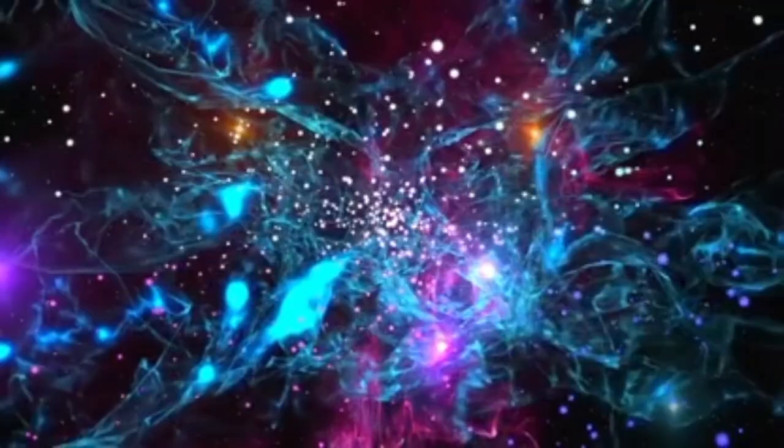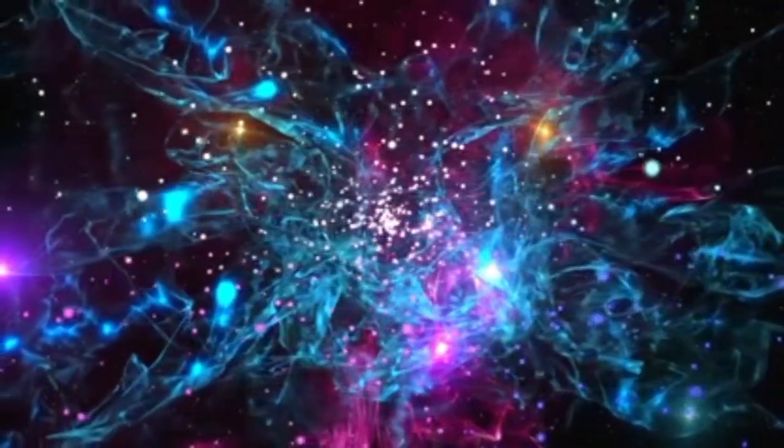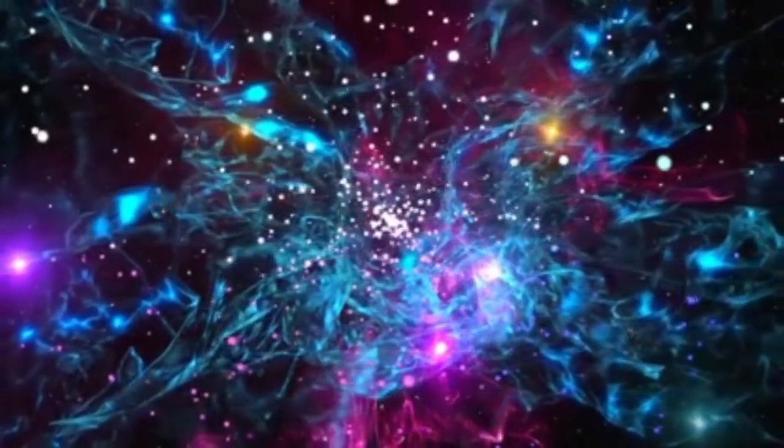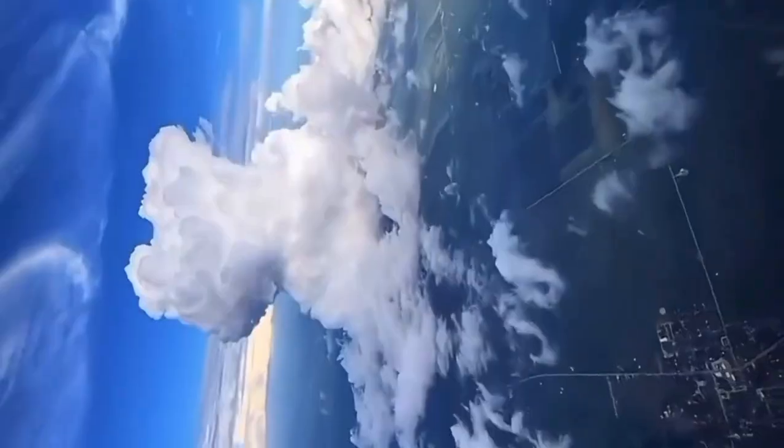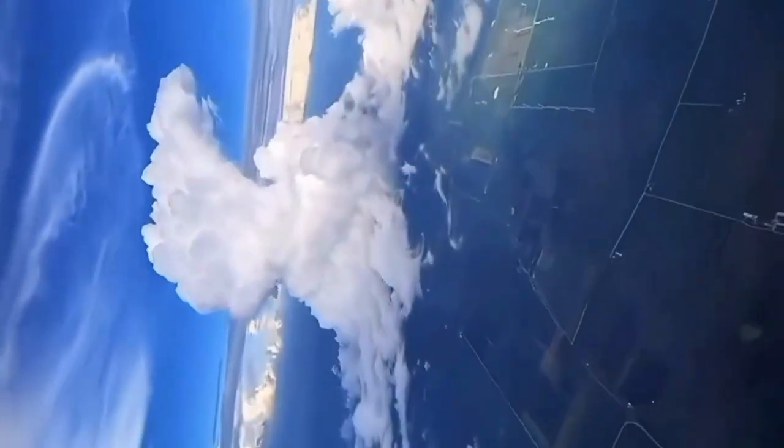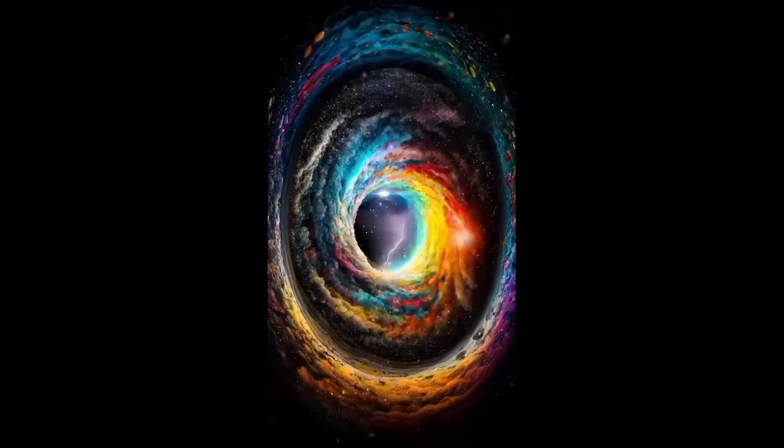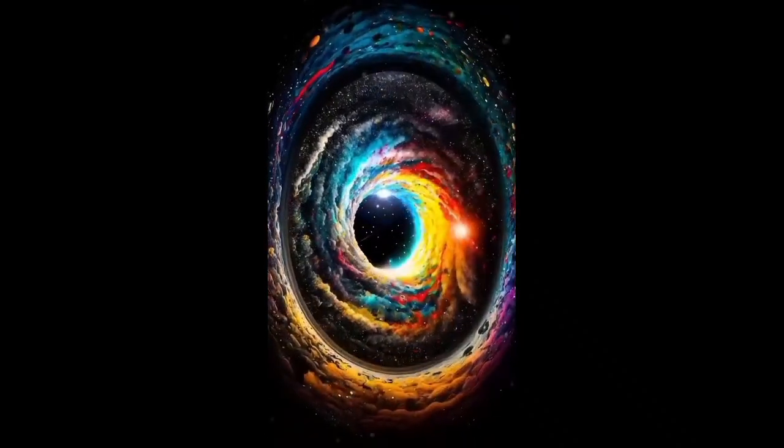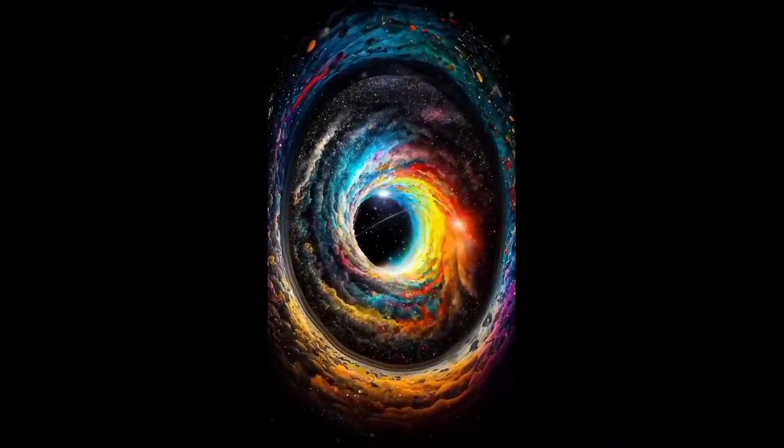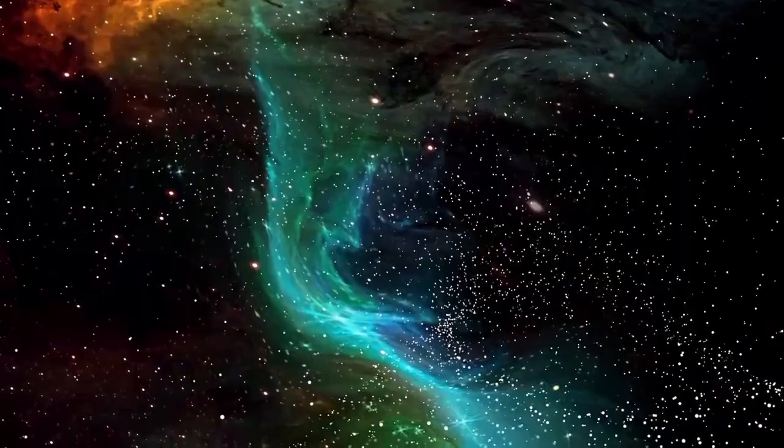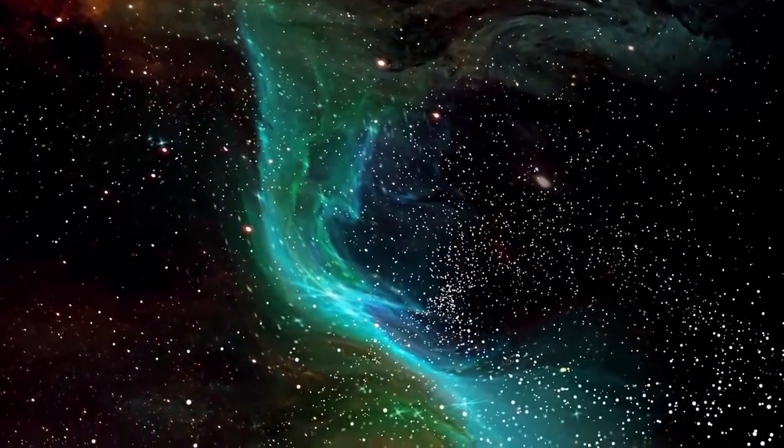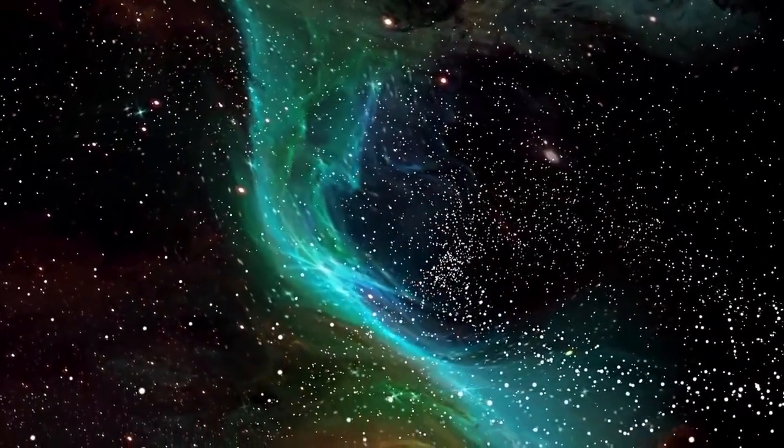In the observable universe, there are another 10 million similar superclusters. As we zoom out, we discover an increasing number of mapped galaxies. That is, galaxies that have been identified. These mapped galaxies represent only a minuscule portion of what is actually out there. There are hundreds of billions of galaxies that haven't yet been fully mapped.